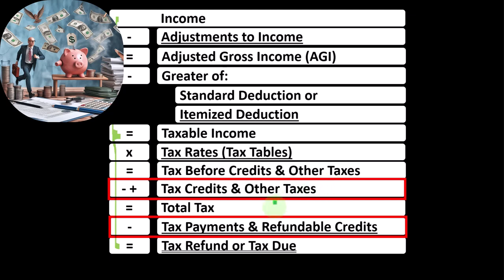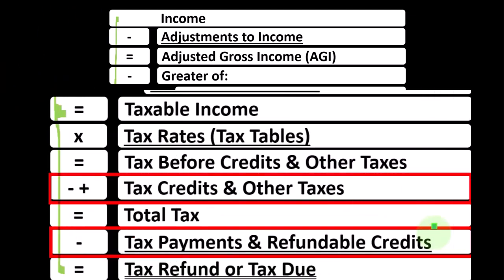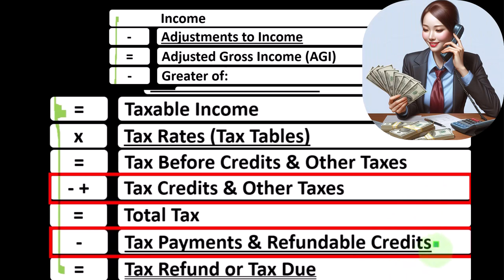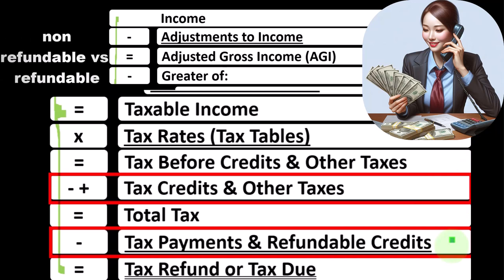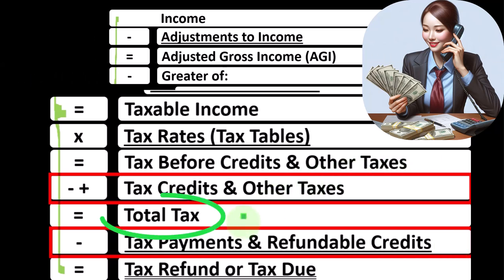Once we apply the credits and other taxes, we get to the total tax. Then we compare that to the tax actually paid — usually through W-2 withholdings or estimated payments — to get to the refund or amount due. However, we also have credits down in the payment area as well, because some credits might be non-refundable up top versus the refundable portion down below.